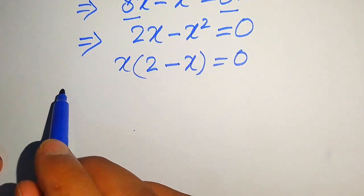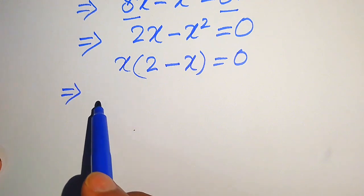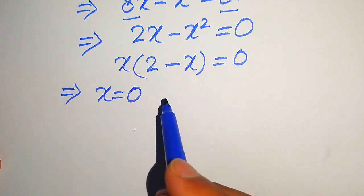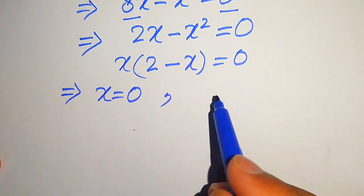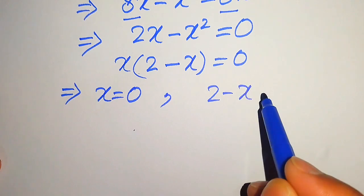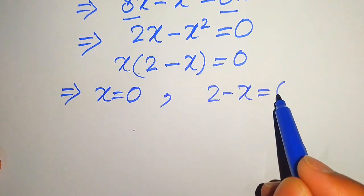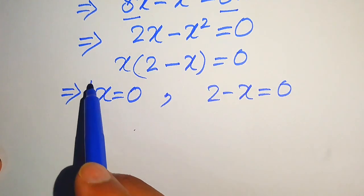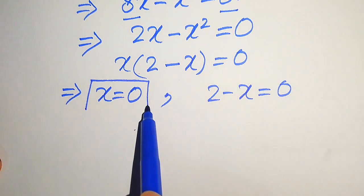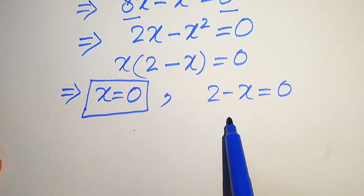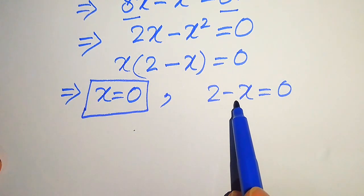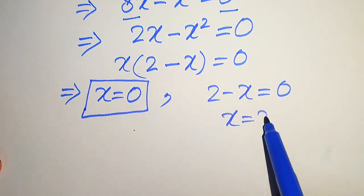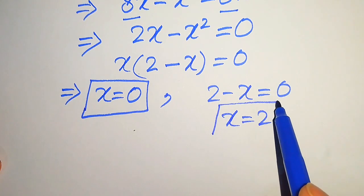We divide this into two cases. The first case gives x equals 0. The second case is 2 minus x equals 0, from which we move minus x to the right hand side and get x equals 2. So these are our two values of x.